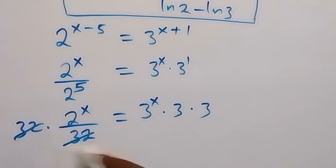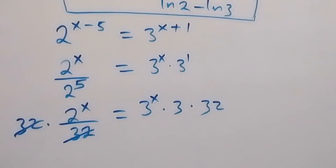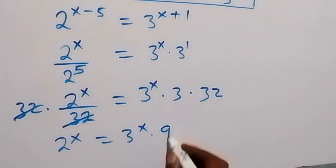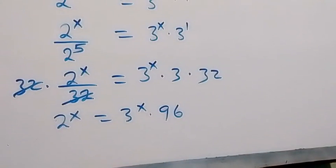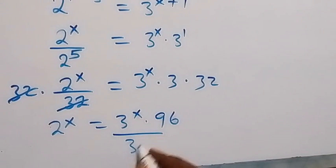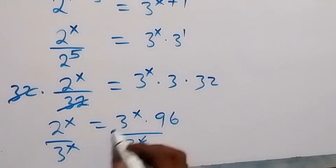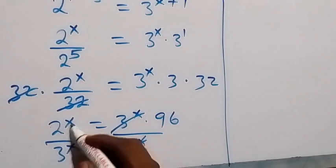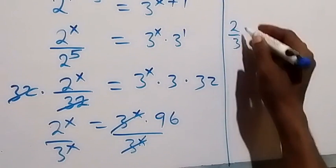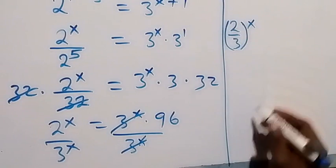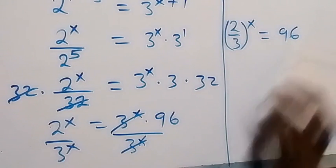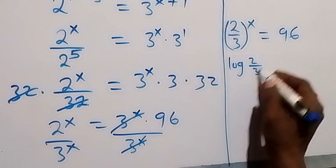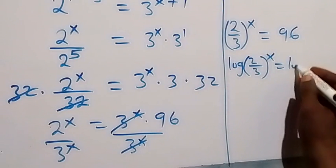So this is 2 raised to power x over 32 equals to 3 raised to power x times 3, that's 3 raised to power x times 3. Then multiply both sides by 32: 32 cancels here, giving 2 raised to power x equals to 3 raised to power x times 96. Then divide both sides by 3 raised to power x. On this side, 3 raised to power x cancels, and we can write the left side as 2 over 3 raised to power x, which equals 96.